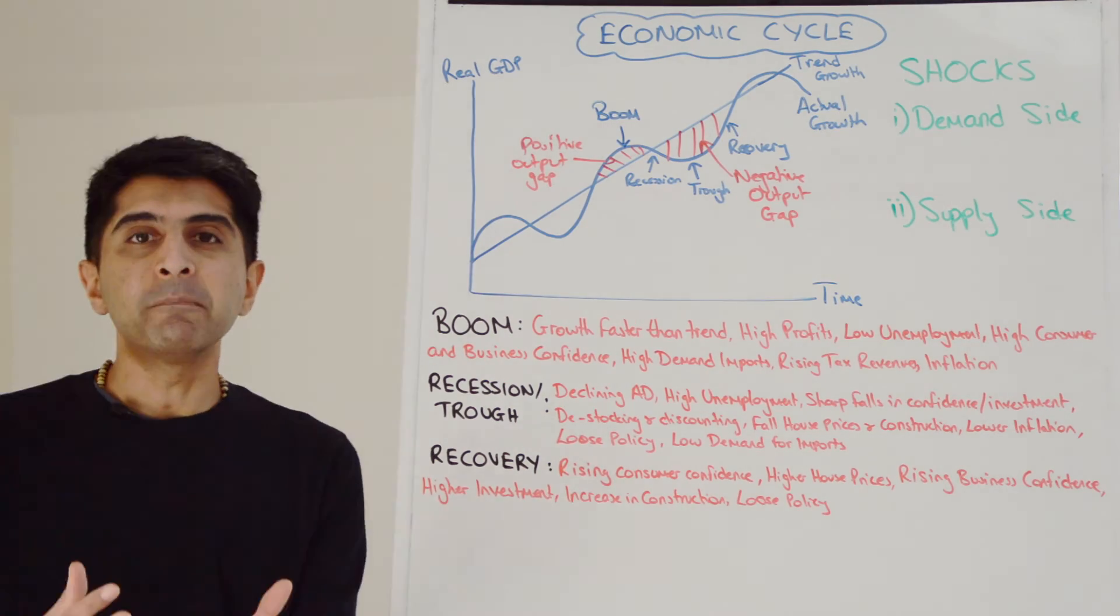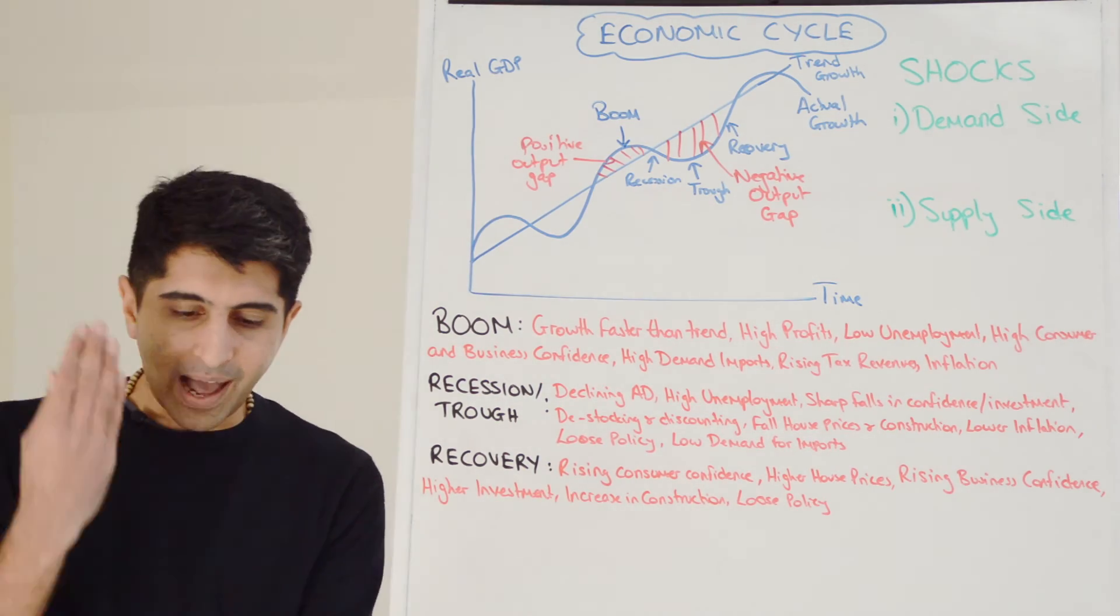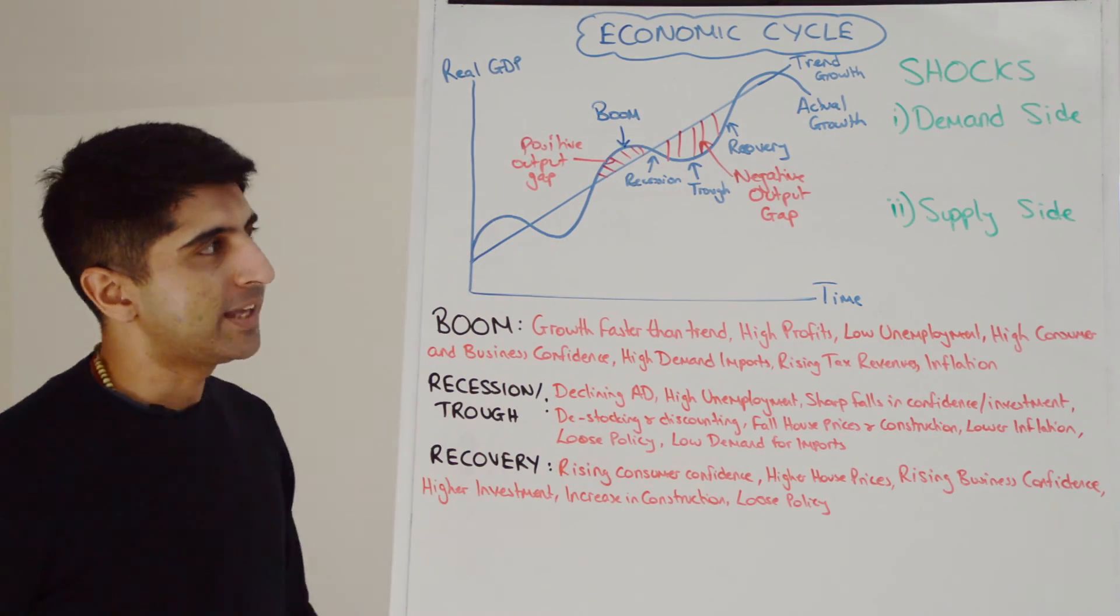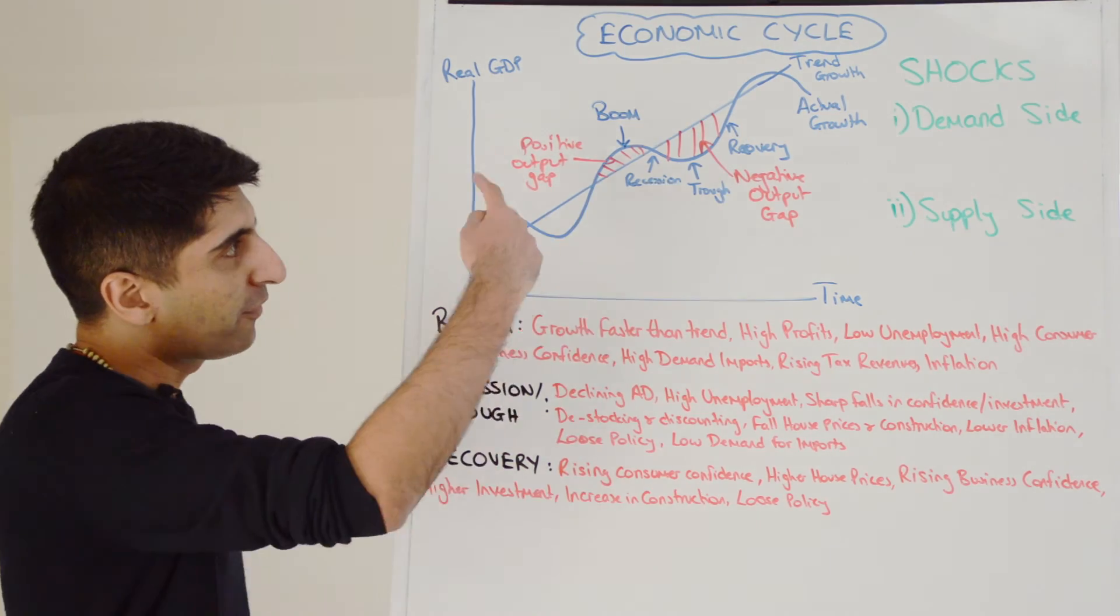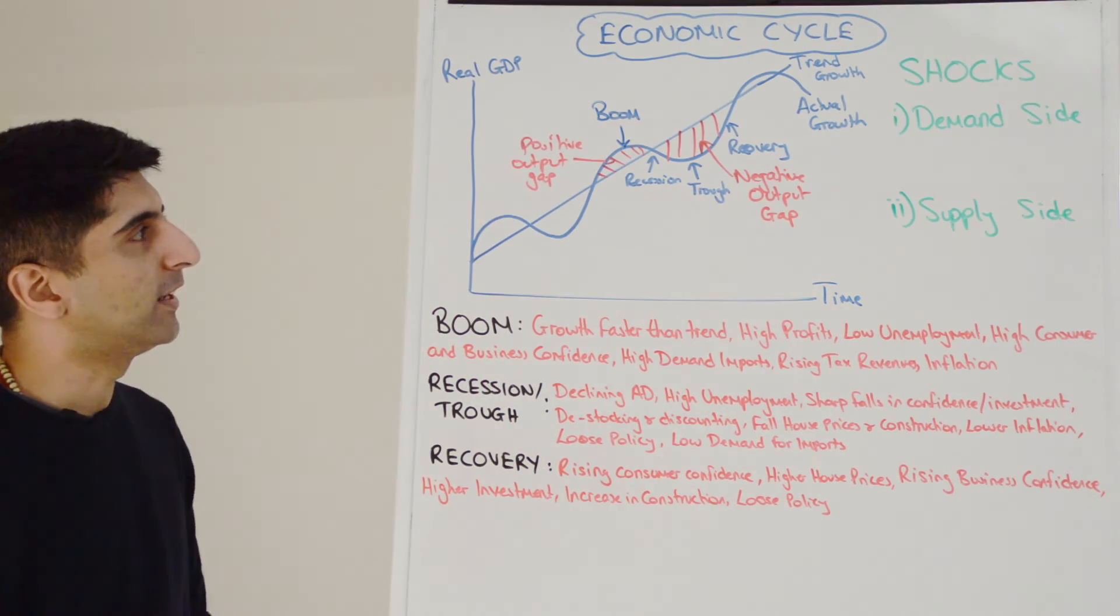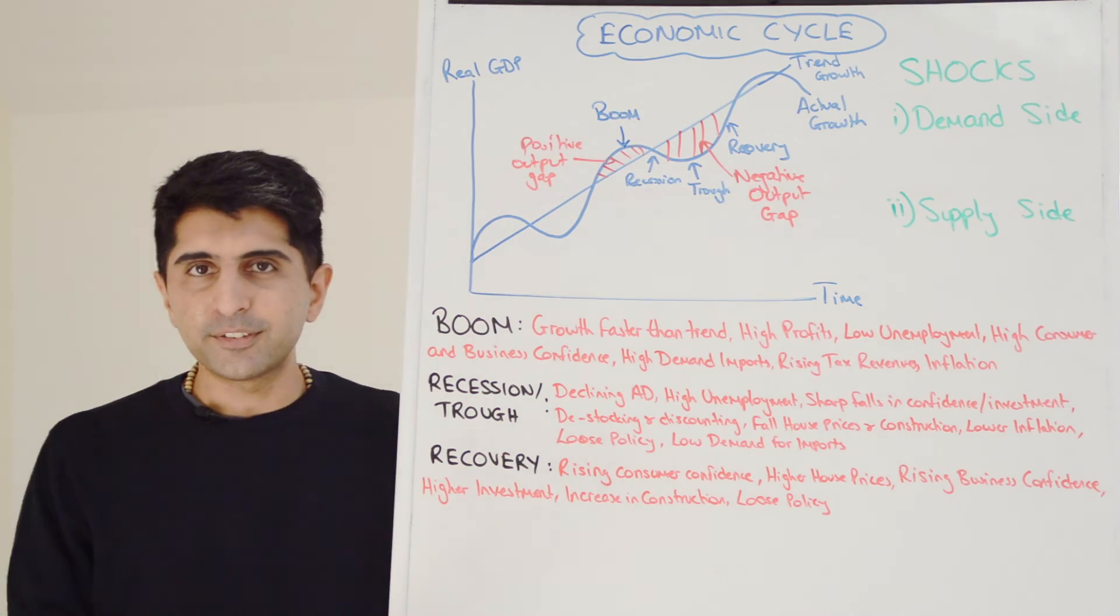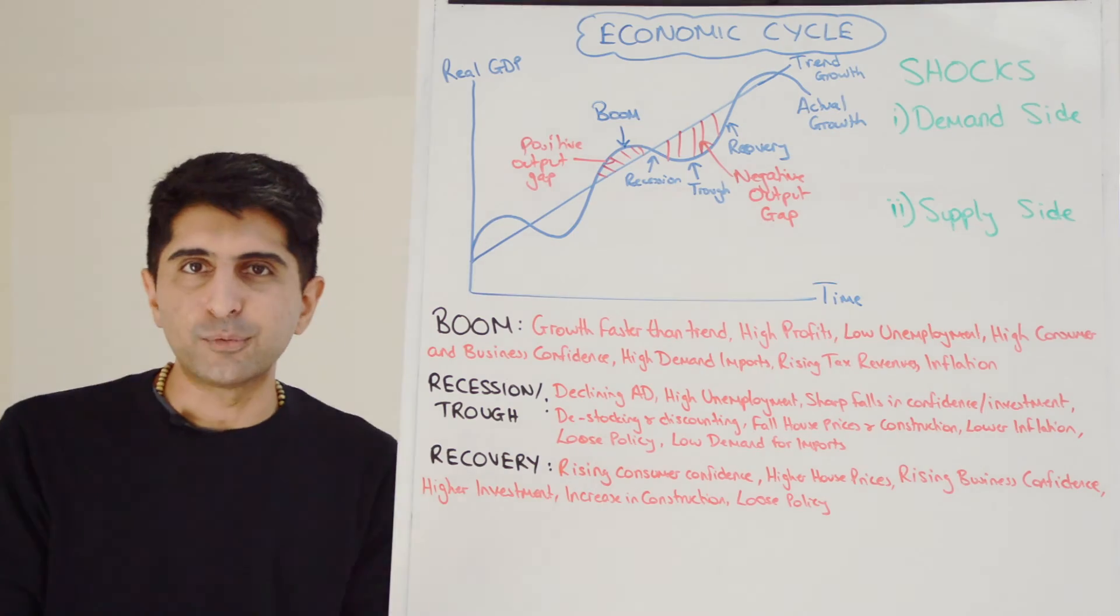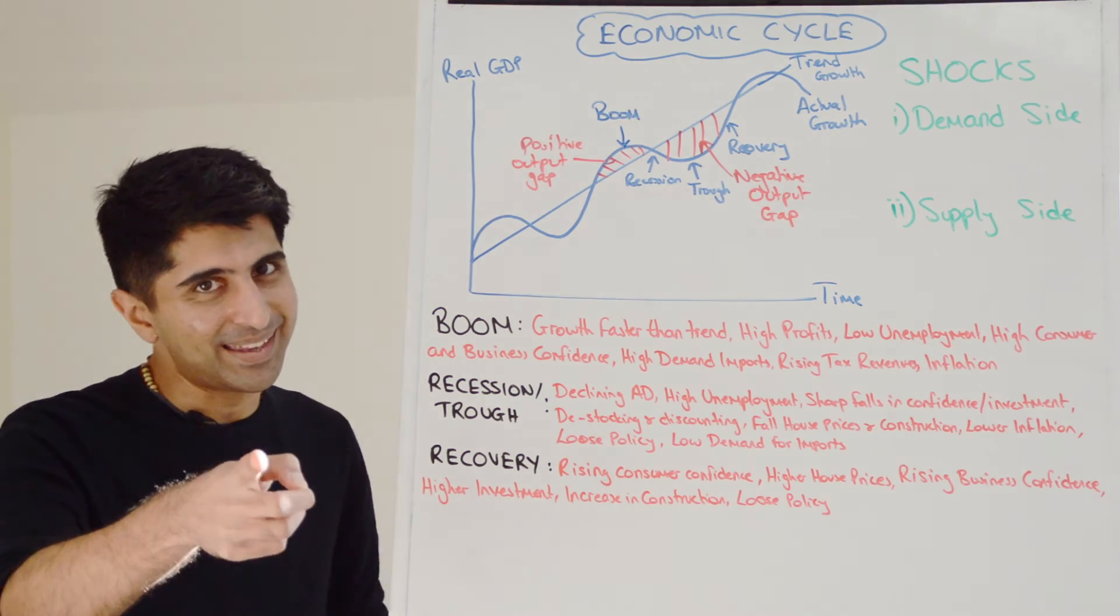But the key is that they are shocks. They can't be predicted. And when they happen, the economy suffers. And that explains why we get these recessions and why we get fluctuations in GDP, which cause the economic cycle, the business cycle to occur. So there you go. That's the economic cycle for you. Everything you need to know. Fascinating stuff. Stay tuned for the next video as we look at the costs and benefits of growth. See you then, guys.